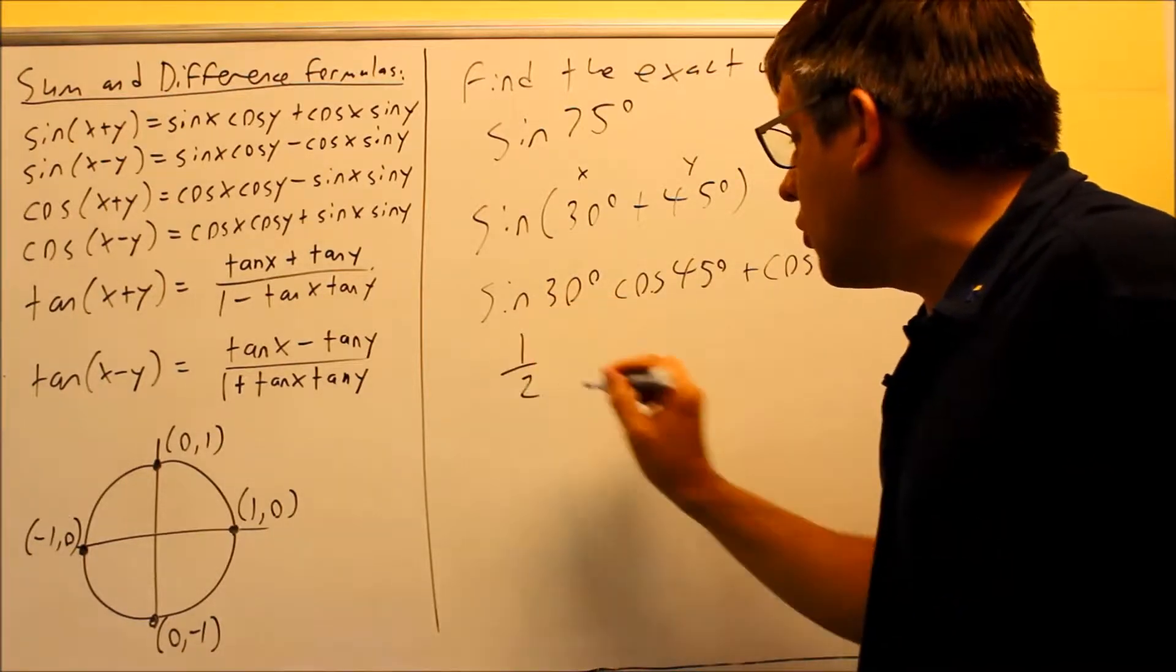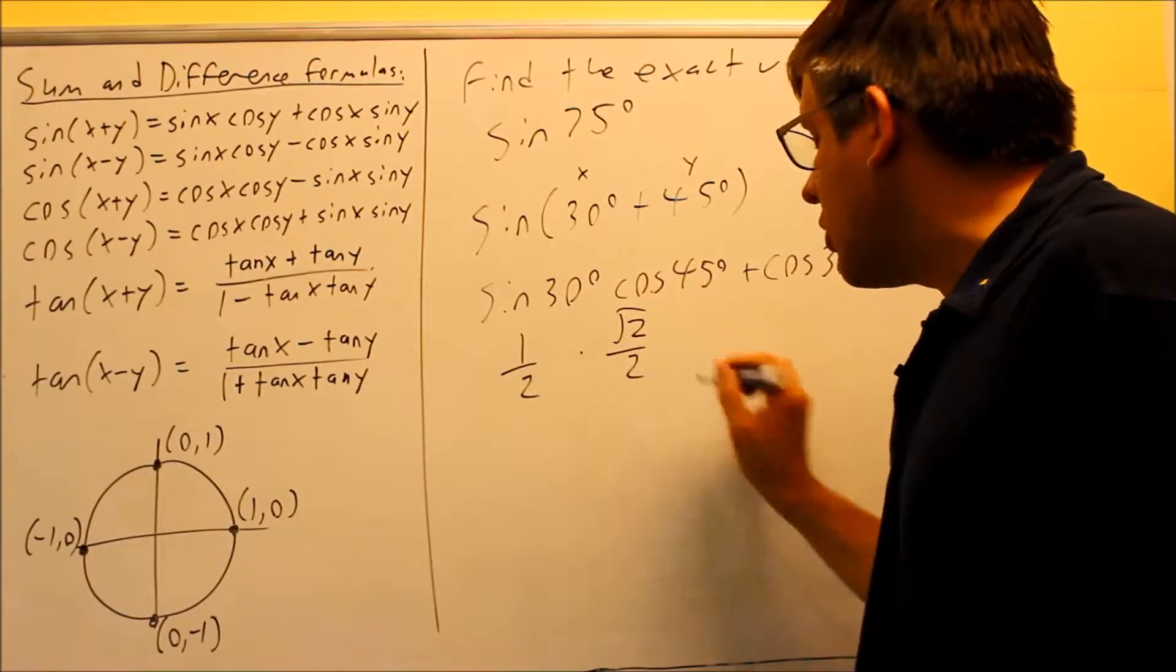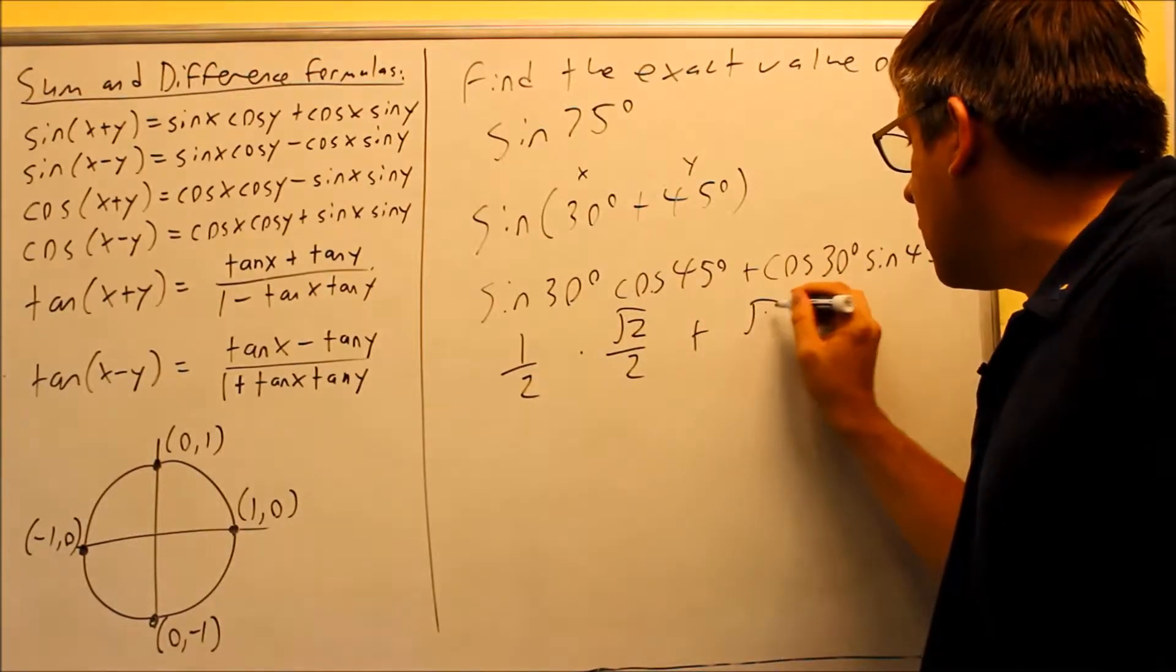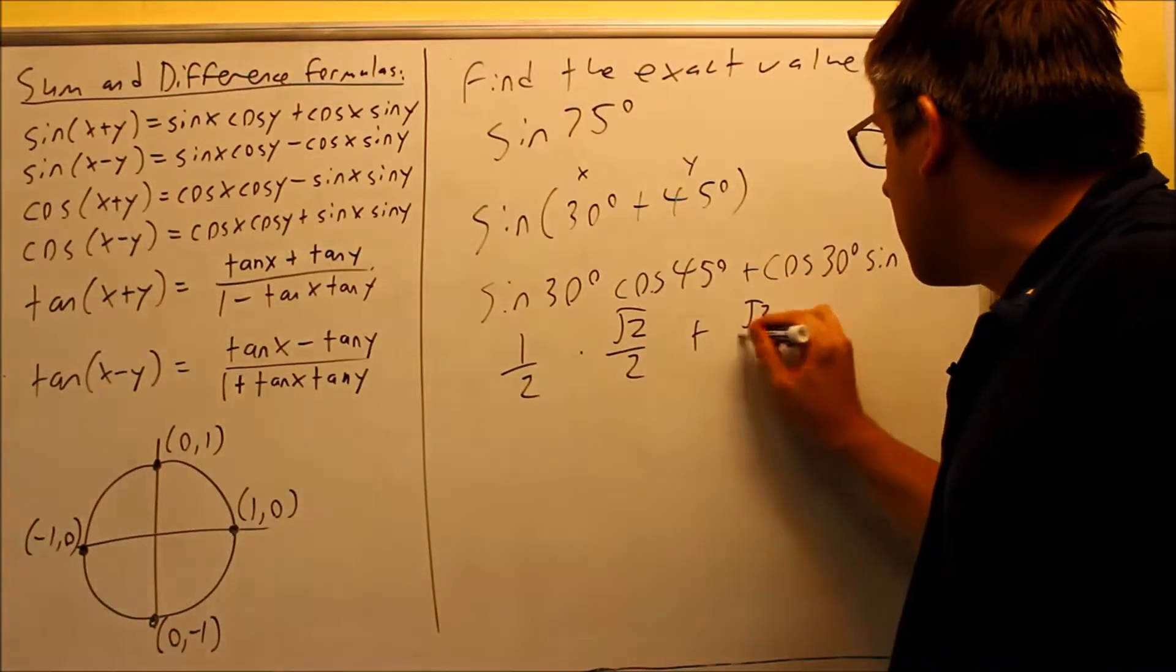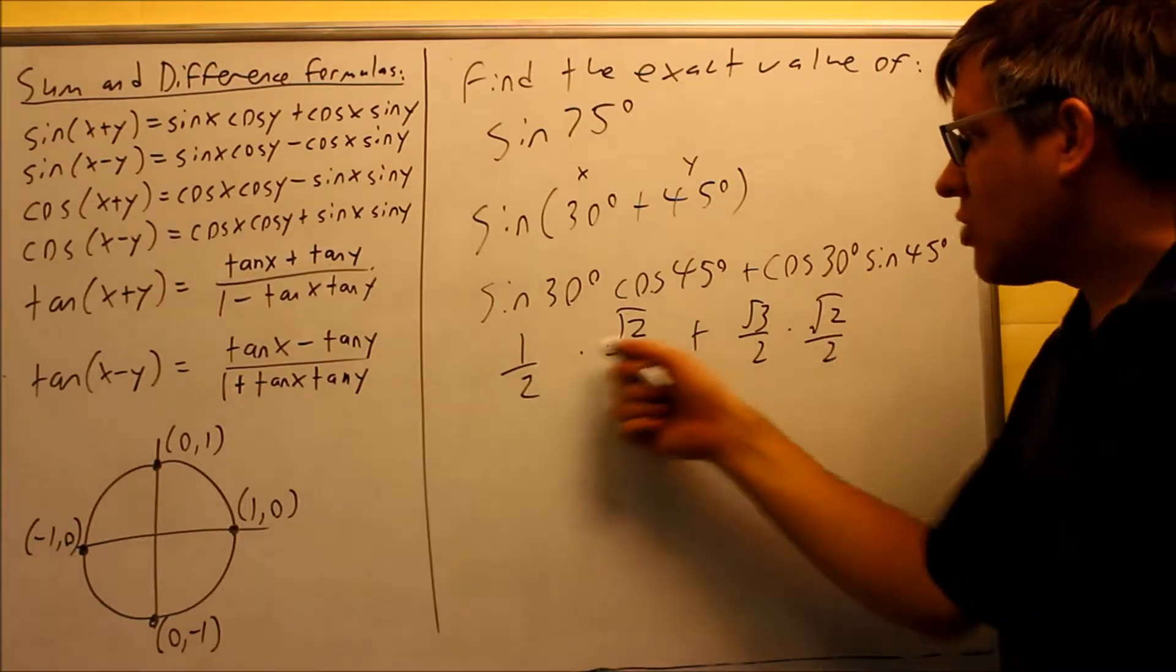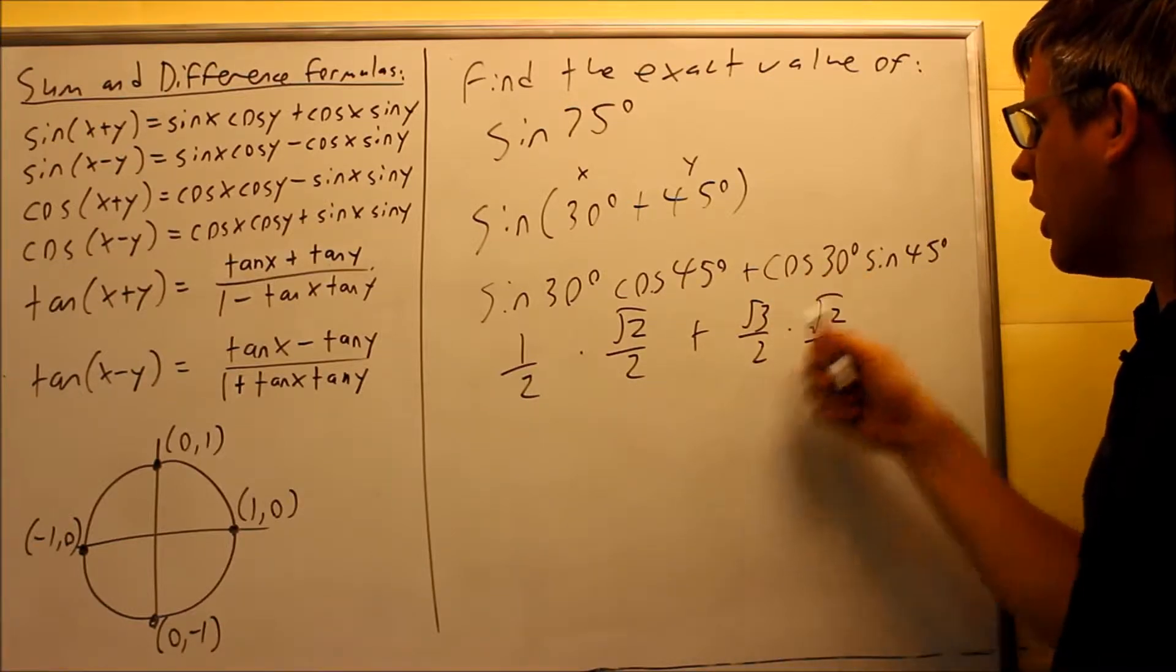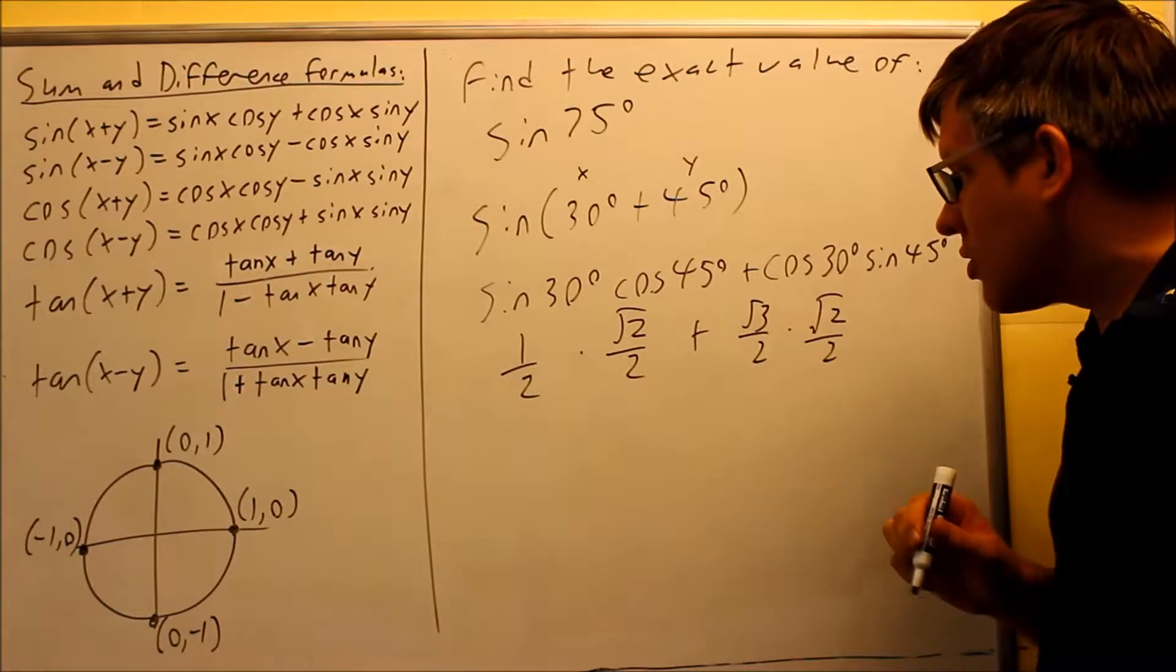So I'm going to go ahead and fill these in with the values from your table. Sine 30 should be 1 half. Cosine 45 is square root of 2 over 2. Cosine 30 is square root of 3 over 2, and then this is going to be square root of 2 over 2. So we have each one of those individually, all the exact values from our unit circle.